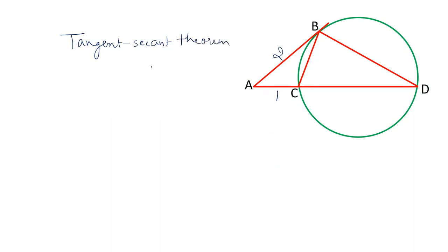the square of the length of the tangent equals the product of the two parts from the external point, AC and AD. So the theorem is: AB squared equals AC times AD, not CD. Remember this point, AC times AD.